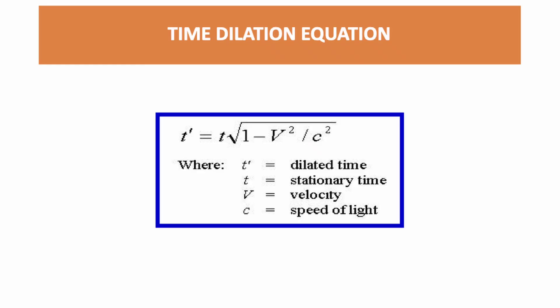Let's look at the time dilation equation. T' = T√(1 - V²/c²). Where T' is the dilated time, T the stationary time, V the velocity of the object and c the speed of light.